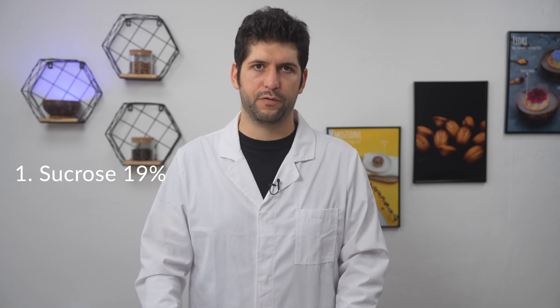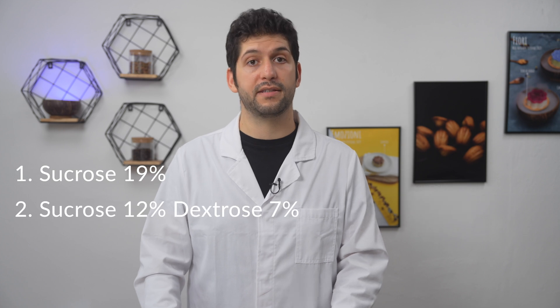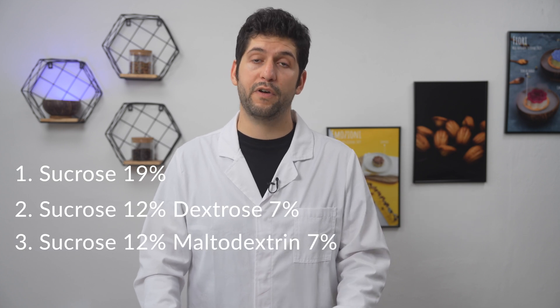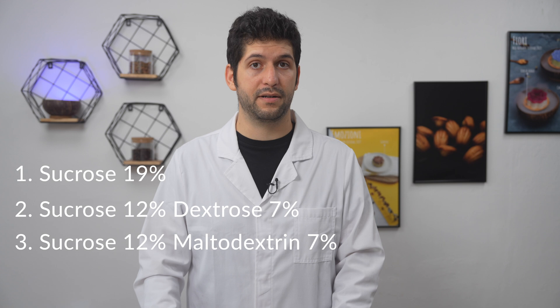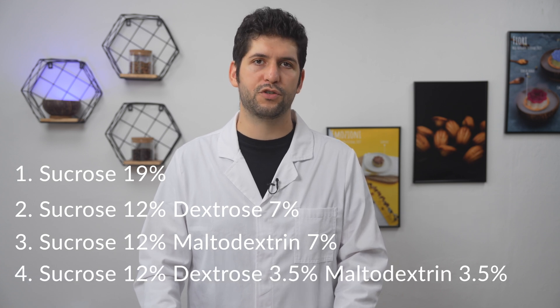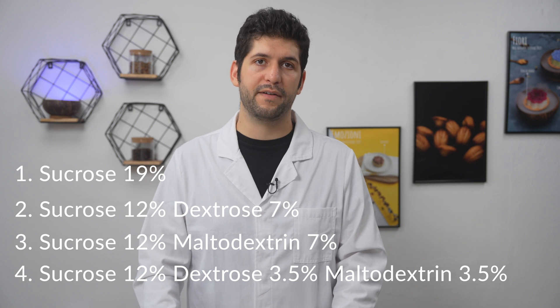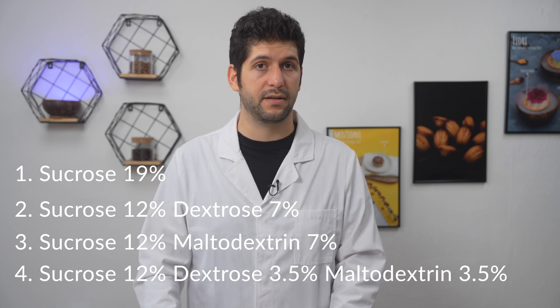What we are going to do is to test four standard gelato recipes where we change the types and quantities of sugars. We start with only 19% of sucrose, then we will have 12% sucrose and 7% of dextrose, then 12% sucrose and 7% maltodextrin, and finally a test with three sugars: 12% sucrose, 3.5% dextrose, and 3.5% maltodextrin.